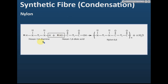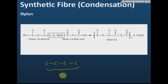For nylon, the monomers are hexane-1,6-diamine and hexane-1,6-dioic acid. The 'R' in the structure represents a long carbon chain — it can be a few atoms; here four atoms are drawn, but it can be four, five, six, or seven atoms. Through condensation reaction — because we have OH and H — they join together to form nylon.